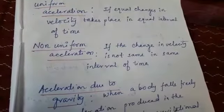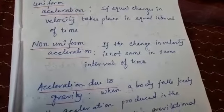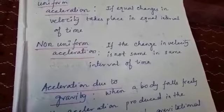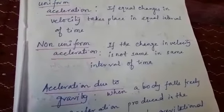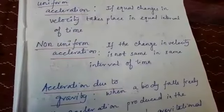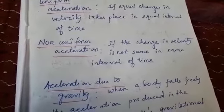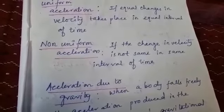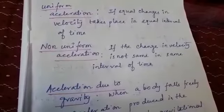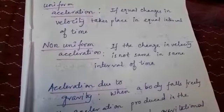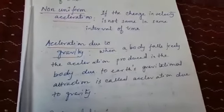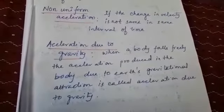Non-uniform acceleration is when the change in velocity is not the same in equal time intervals. For example, you are driving a car on a crowded road — sometimes you get free space and increase your velocity, then your velocity decreases because of the crowd. The velocity is not maintained uniformly in equal time intervals, so that is called non-uniform acceleration.